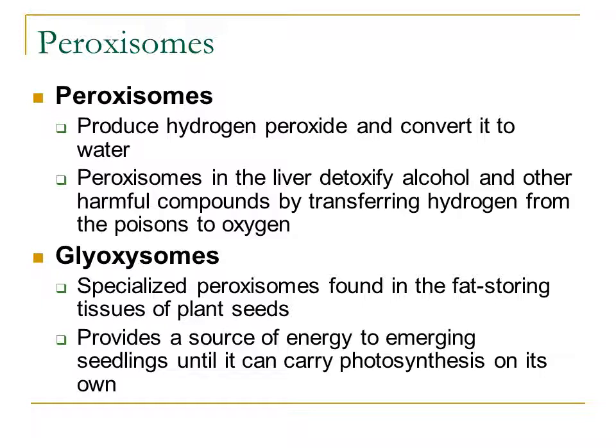Another organelle is called a glyoxosome, and we find many of these in the seeds of different plants. Have you ever wondered how a seed grows before it has sunlight? It can't photosynthesize yet, so how does it grow to the point where it can poke out of the soil and capture sunlight for energy? Glyoxosomes are specialized peroxisomes found in the fatty-storing regions of seeds, and they provide a source of energy that seeds can use until they've produced leaves and stems and can carry out photosynthesis on their own.